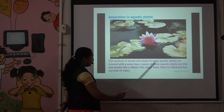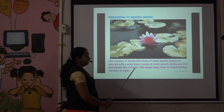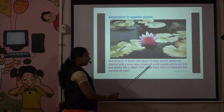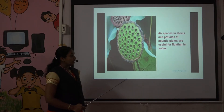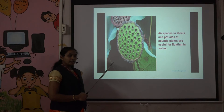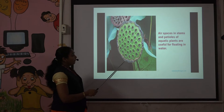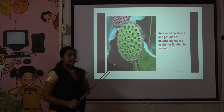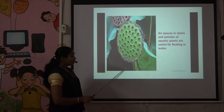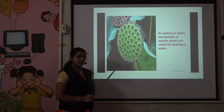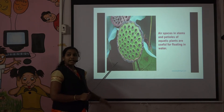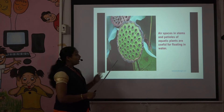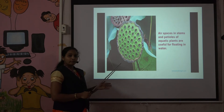Their shape is thin and slender, like a ribbon, to withstand a fast current of water. There is also the presence of air spaces in petioles and stems. Petioles are the stalks of leaves. Because of these air spaces, the plant becomes very light and is able to move in water freely.